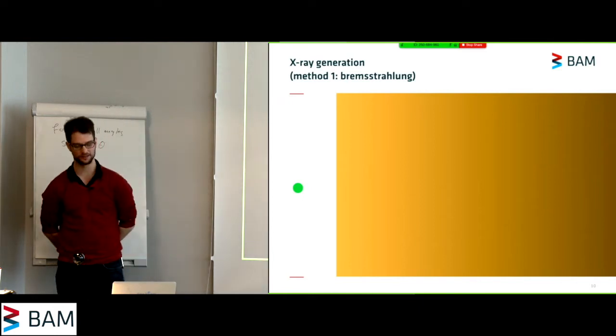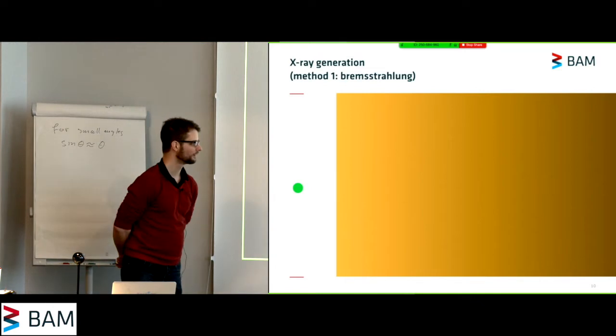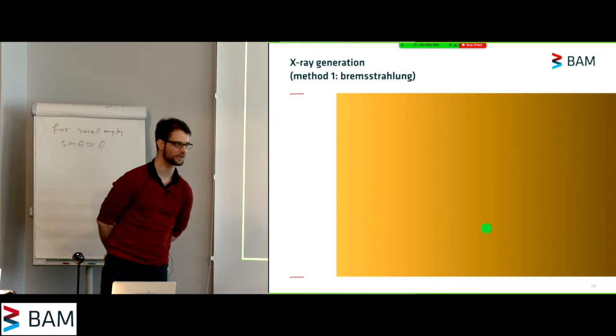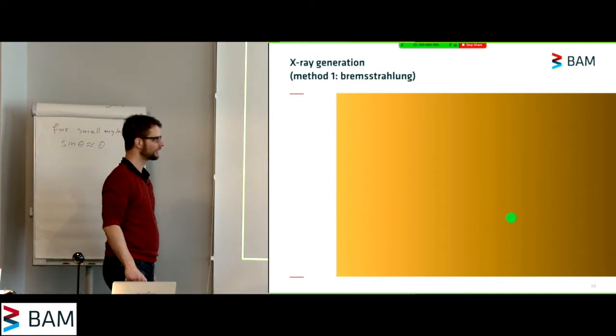And the first one is by means of bremsstrahlung, or breaking radiation. So what can happen to an electron when it goes into the target is that it bounces around and gradually loses energy as it does so.